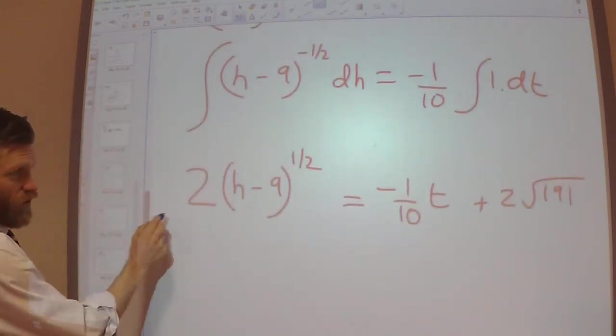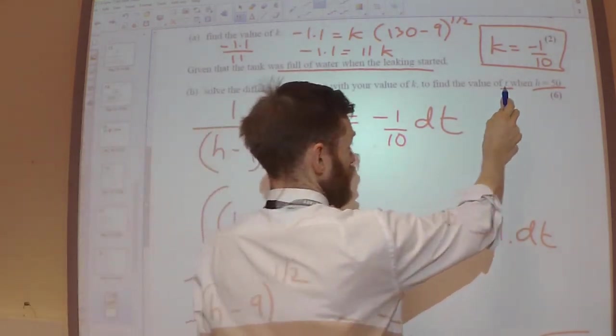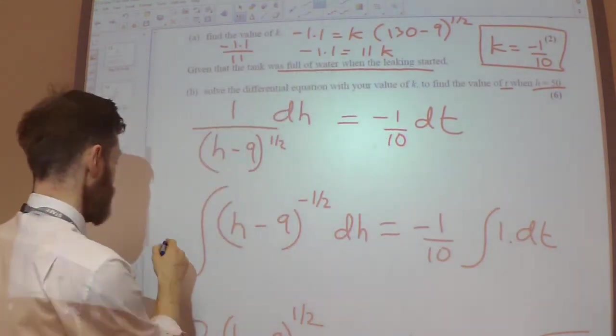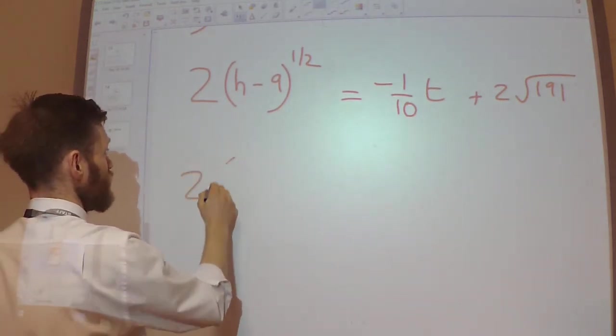And now, I've got an equation that I can actually use to solve the problem. So, I need to find the value of T when H equals 50. So, let's substitute H equals 50 into this.